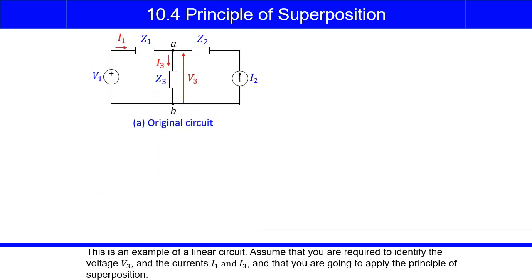This is an example of a linear circuit. Assume that you are required to identify the voltage V3 and the currents I1 and I3, and that you are going to apply the principle of superposition.